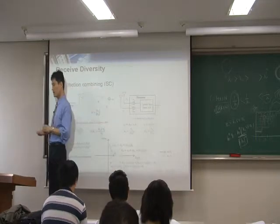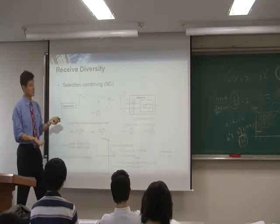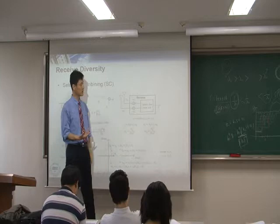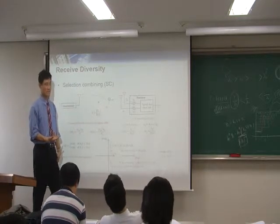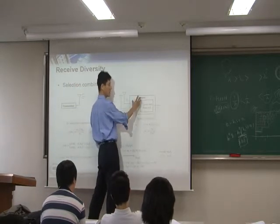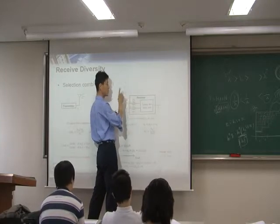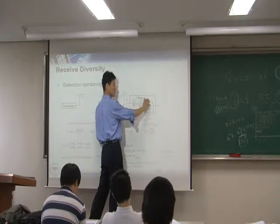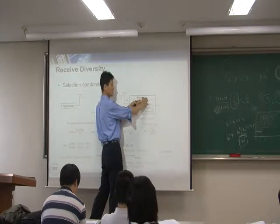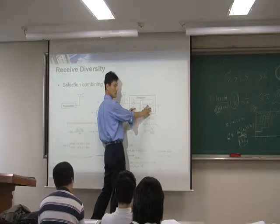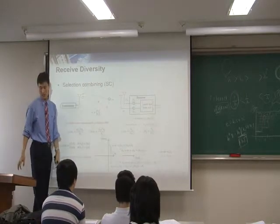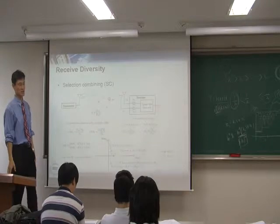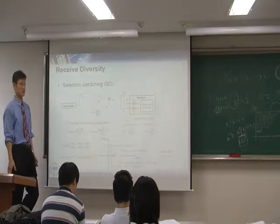The reason we consider selection combining is that since only one antenna is active at a time, you only need one RF chain — less hardware, less cost, and less power consumption. That's the intention. Performance-wise, it is worse than MRC, but the hardware savings are the main advantage.